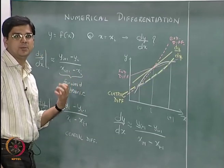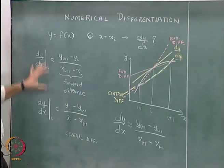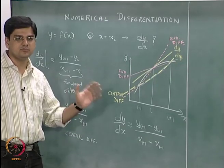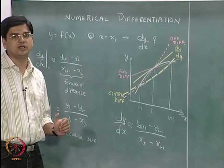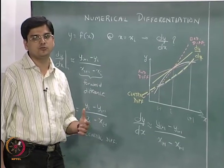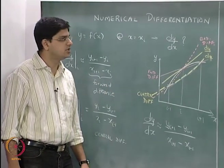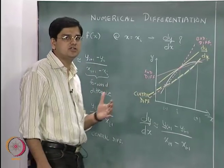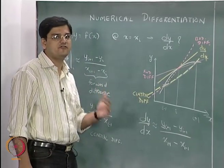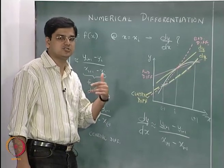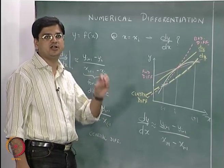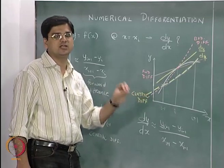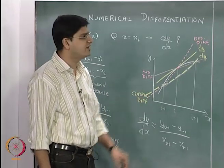That is the whole idea behind using forward, backward, and central differences in order to get the numerical derivatives or the approximations of the numerical derivatives — given either a functional form f of x, or some mechanism to generate the values of y given the values of x using some kind of a function y equal to f of x.